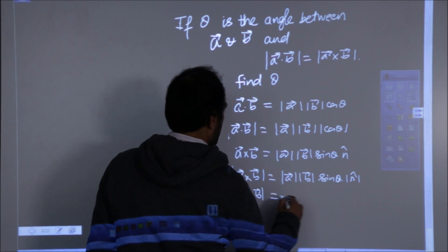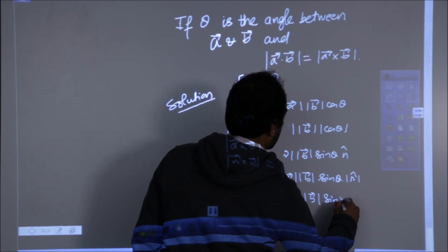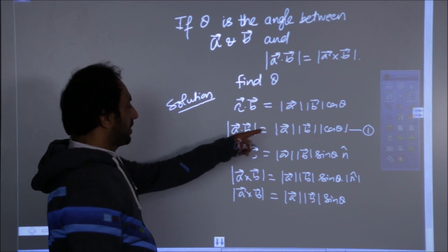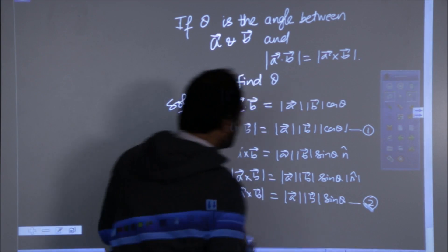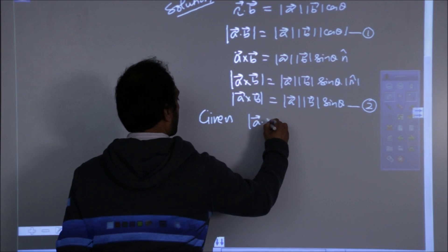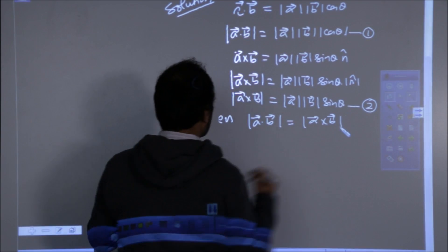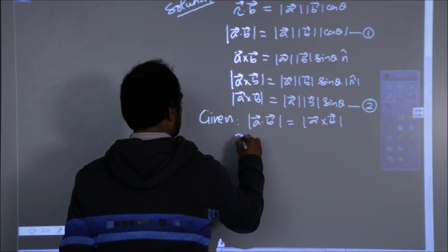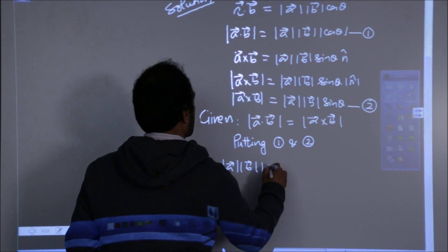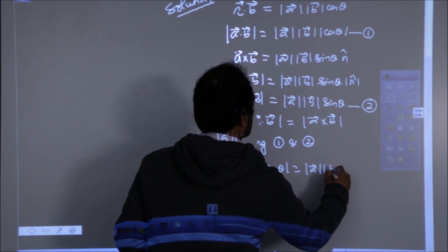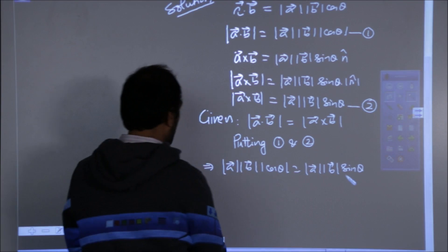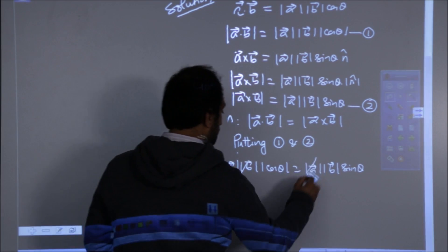Now I mark this equation as equation number one and this as equation number two and use the given condition. What is given to us? We are being given that, and I am putting the values. Mod a mod a will be cancelled, mod b and mod b will be cancelled. This should be your next step.